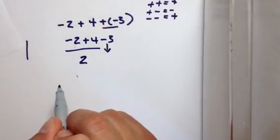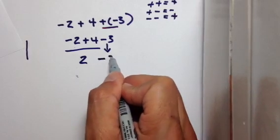Then what you do is you bring over the last number you haven't dealt with, and that's the negative three.